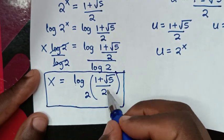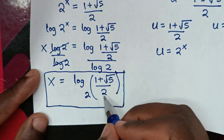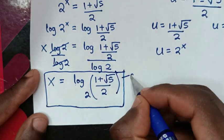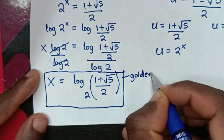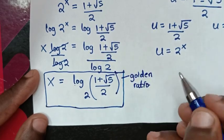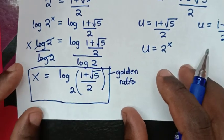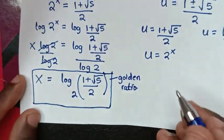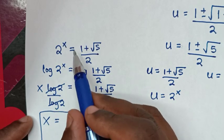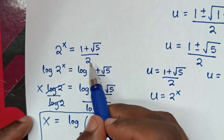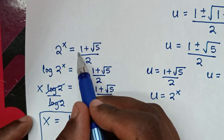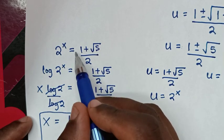Note that 1 plus square root of 5 over 2 is the golden ratio. Alternatively, we can solve from 2 power x equals 1 plus square root of 5 over 2 by applying the natural logarithm.